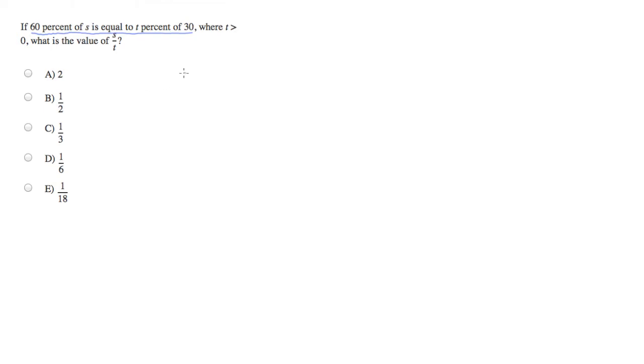Any time I have a number, that number simply becomes itself. Percent becomes over 100, of is multiplication, any variable names simply become themselves, is or is equal to becomes an equal sign. Again, t becomes a variable name which is itself, percent becomes divide by 100, of is multiply, and numbers are themselves.